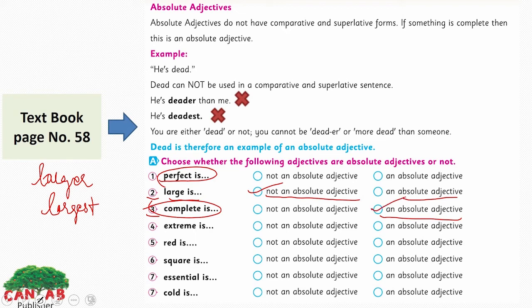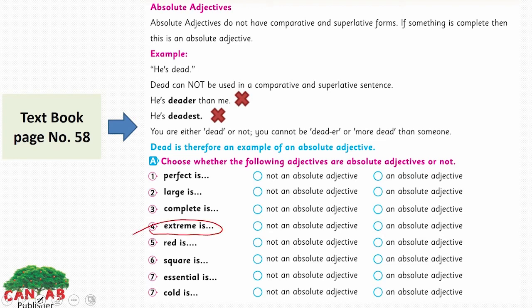The fourth one: 'extreme' — is this absolute or not? Yes, extreme is an absolute adjective. Have you ever heard 'extremer' or 'extremest'? It doesn't have comparative and superlative degree, so it is an absolute adjective. The fifth one: 'red' — this is not an absolute adjective because it has comparative and superlative degree.